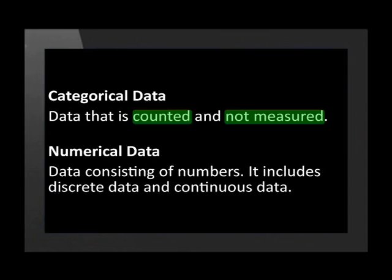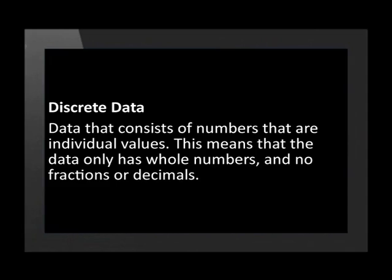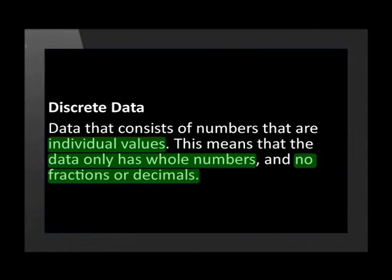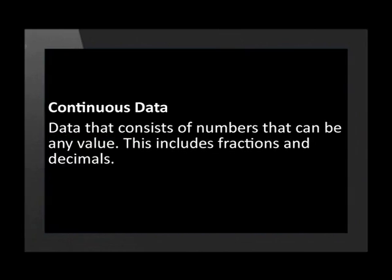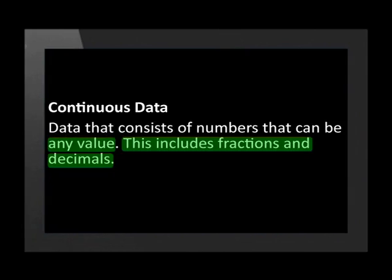Numerical data is data consisting of numbers. It includes discrete data and continuous data. Discrete data consists of numbers that are individual values — whole numbers with no fractions or decimals. Continuous data consists of numbers that can be any value, including fractions and decimals.